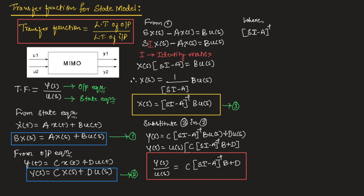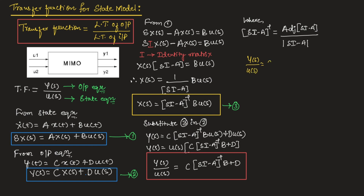You need to remember that (SI − A)⁻¹ can be found using the formula: adjoint of (SI − A) divided by determinant of (SI − A). Substituting this into the transfer function expression, we obtain Y(S)/U(S) = C · [adj(SI − A) / det(SI − A)] · B + D. This is the formula to remember for the transfer function of a state model.